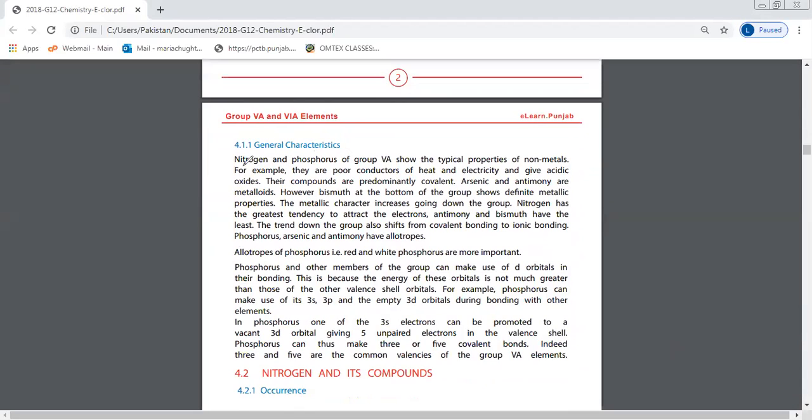General characteristics: nitrogen and phosphorus show typical properties of non-metals. They are both non-metals—phosphorus is a non-metal in solid form, while nitrogen is in gaseous form. They are poor conductors of heat and electricity because they are non-metals, and they give acidic oxides. Non-metals always form acidic oxides.